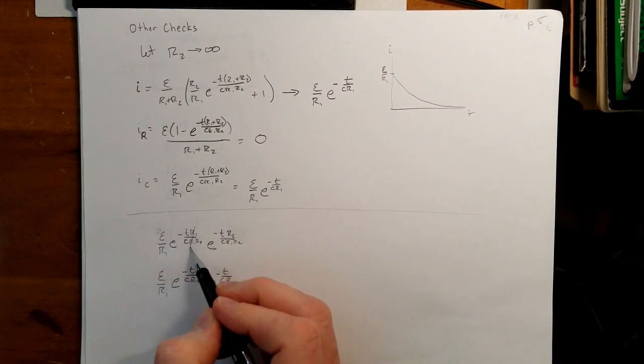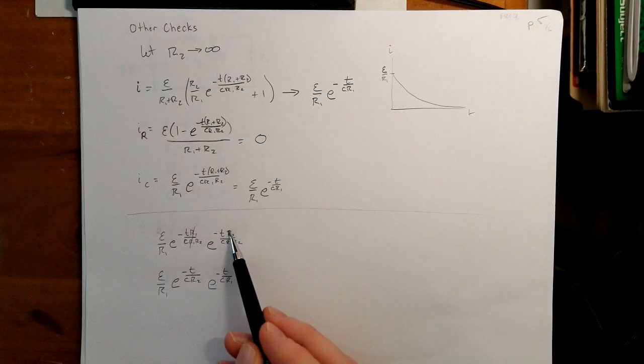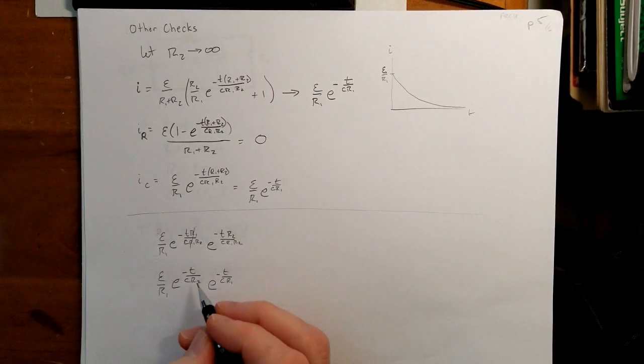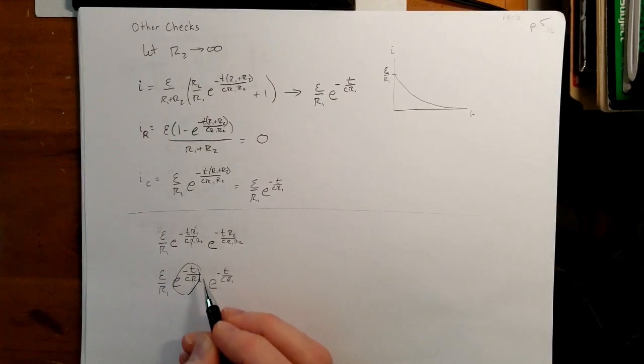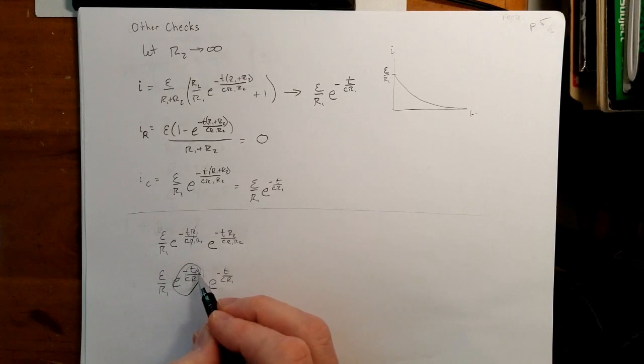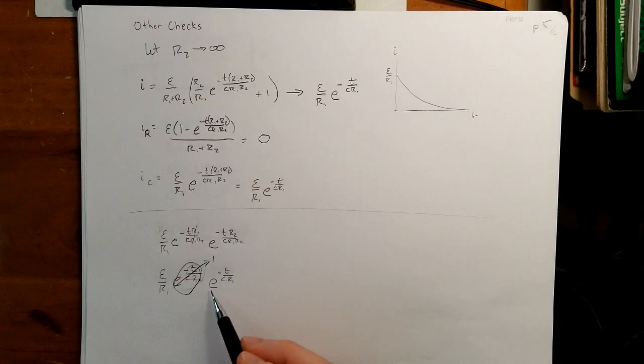Over here, my R1s cancel out, and I'm left with negative T over CR2, and then the R2s cancel out here, I'm left with e to the negative T over CR1. And this term right here, my numerator is practically zero, as R, let's start out at time is equal to zero, but then R2 goes to infinity, and so this term becomes inconsequential very quickly. And so that basically is one, and we're left with epsilon over R1, times e to the negative T over CR1, which is what I've written right there.